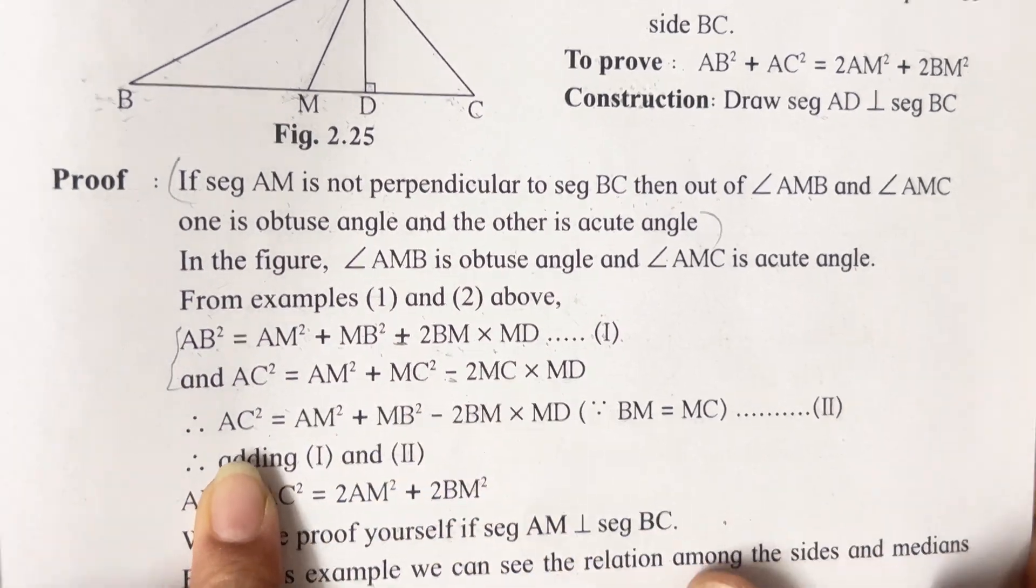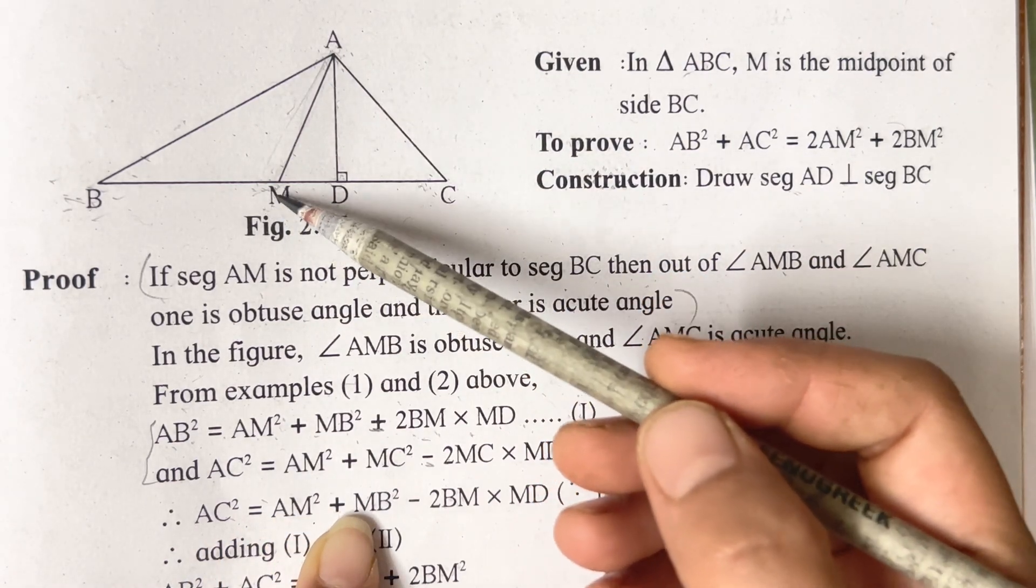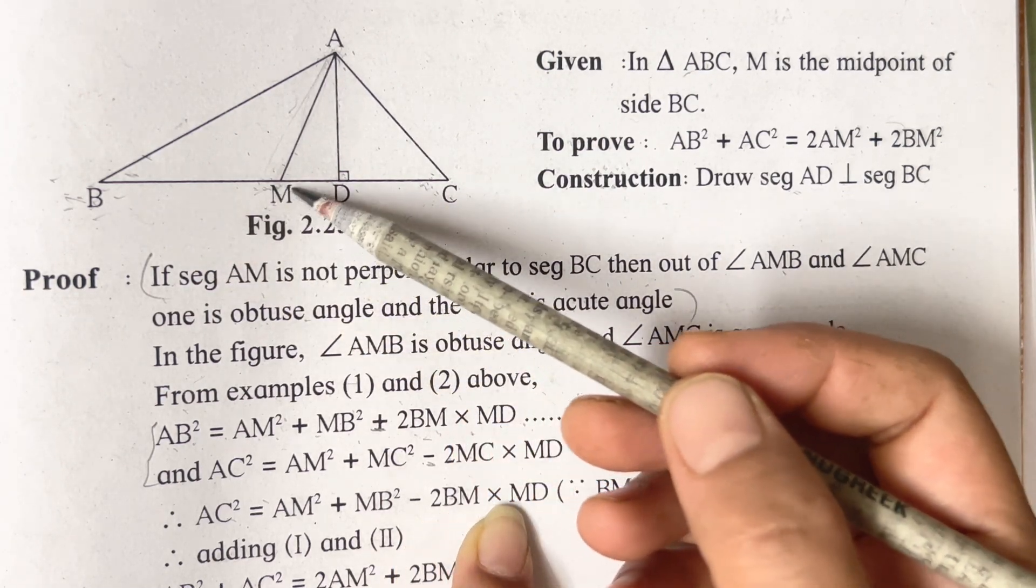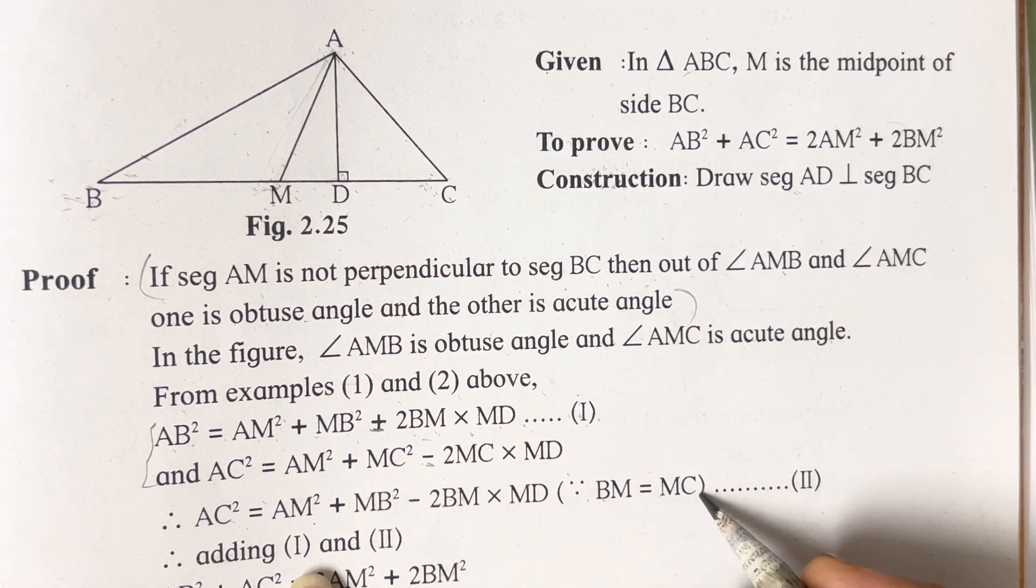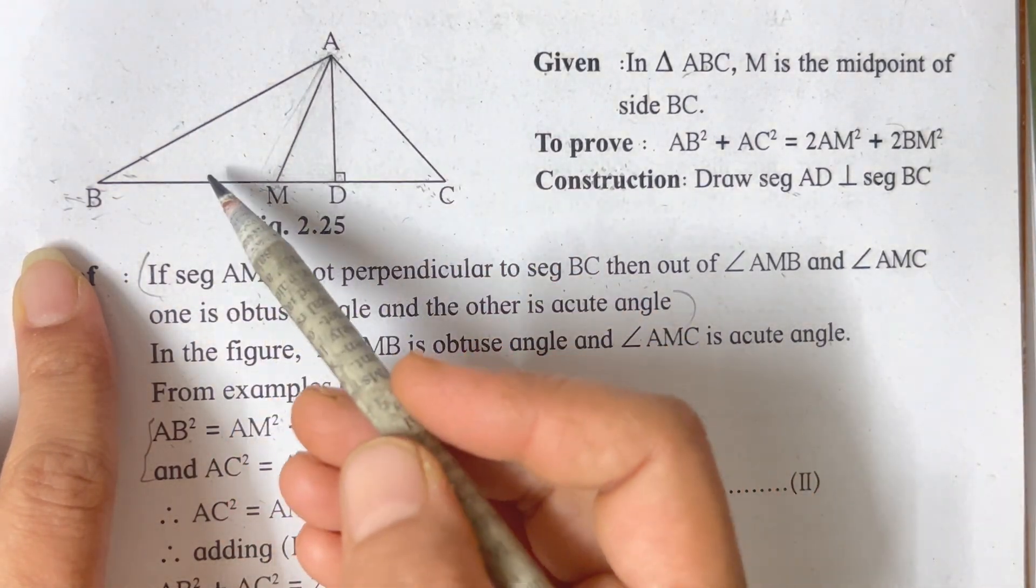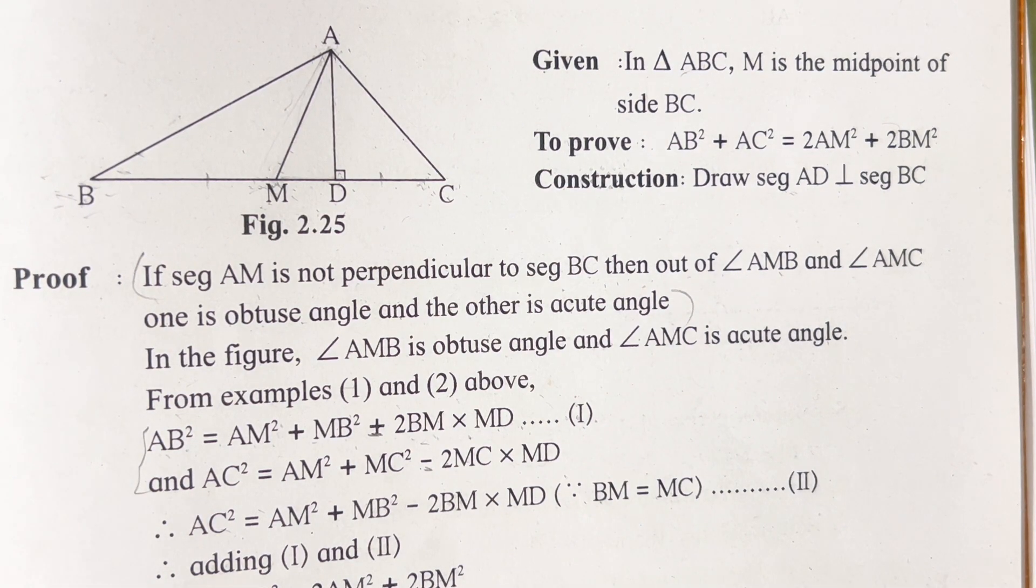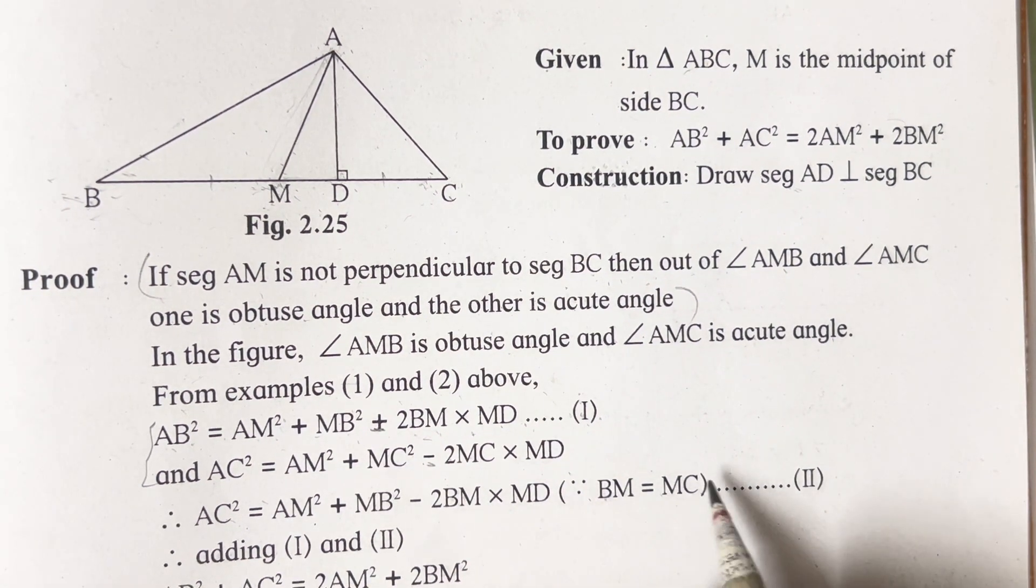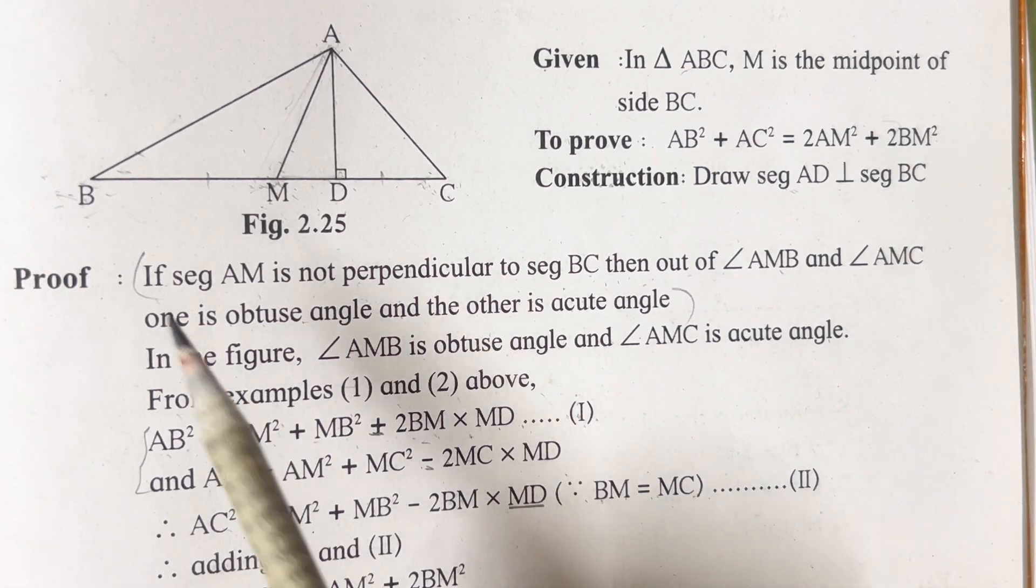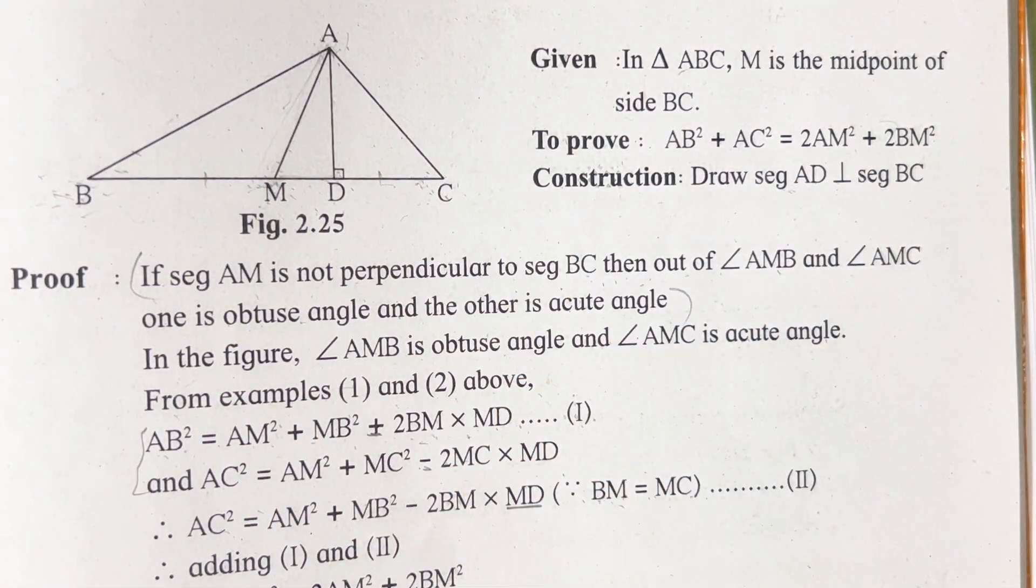Now, AC square is equal to AM square plus MB square minus 2BM into MD, wherein BM is equal to MC. BM is equal to MC because it is a midpoint. A midpoint divides the segment into two equal parts. Therefore, this and this line or segment is equal. Therefore, instead of writing BM and MC, they have directly written MD. Remember, you have to mention this. The reason because of the midpoint, the segment is divided into two equal parts.